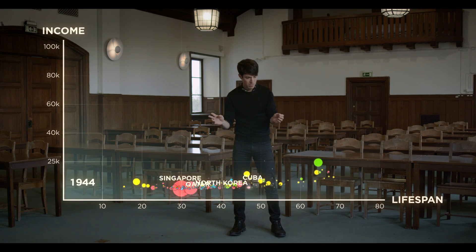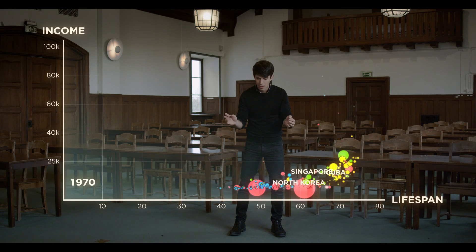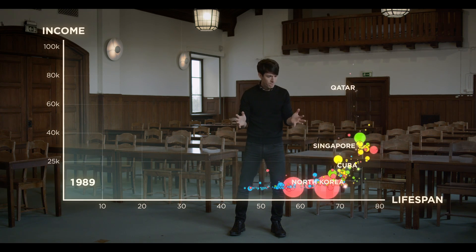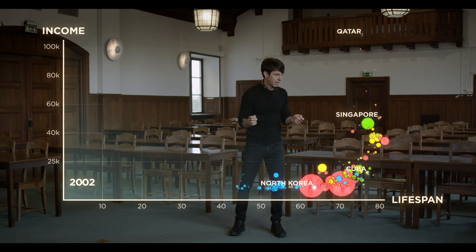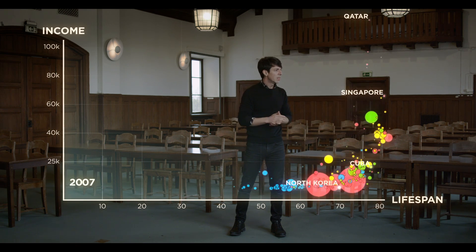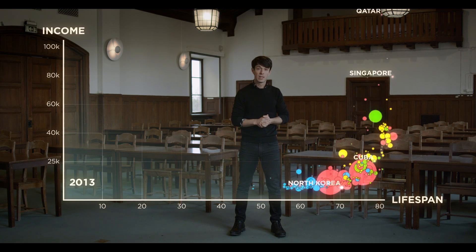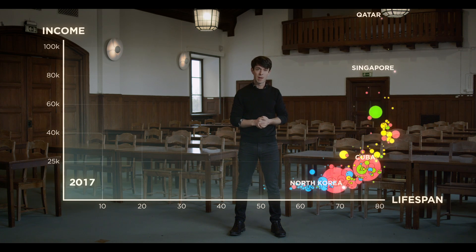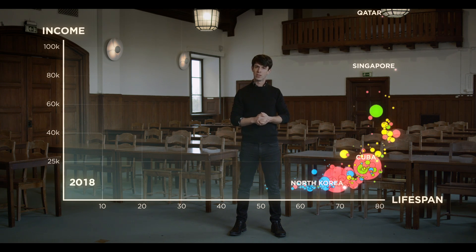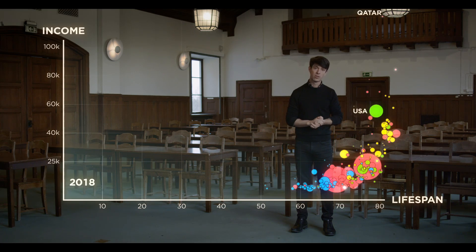Look at them. Look at the very fast progress they all make. How Singapore even outchances all Western nations on both income and lifespan. What does this tell us? Do these nations also represent good societies? Is it preferable to live in Qatar than in the US, where people, on average, are poorer and die earlier?